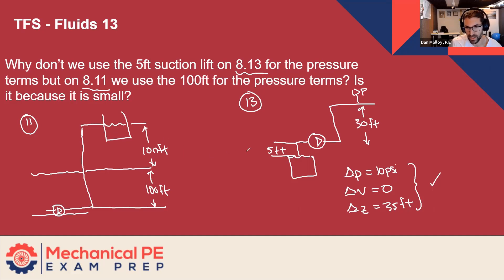So if we're applying the Bernoulli equation here, we have to think about these three terms again: delta P, delta V, and delta Z. Similarly, we're going to assume that the velocity term is zero, but how are we going to treat P and Z in this situation?